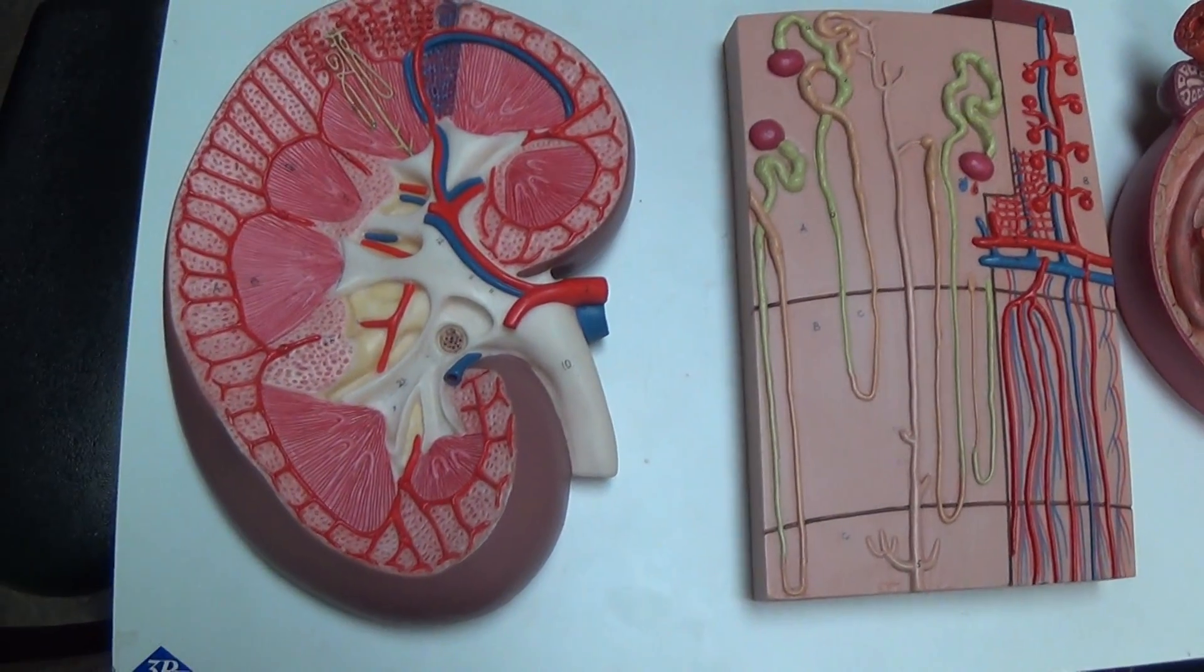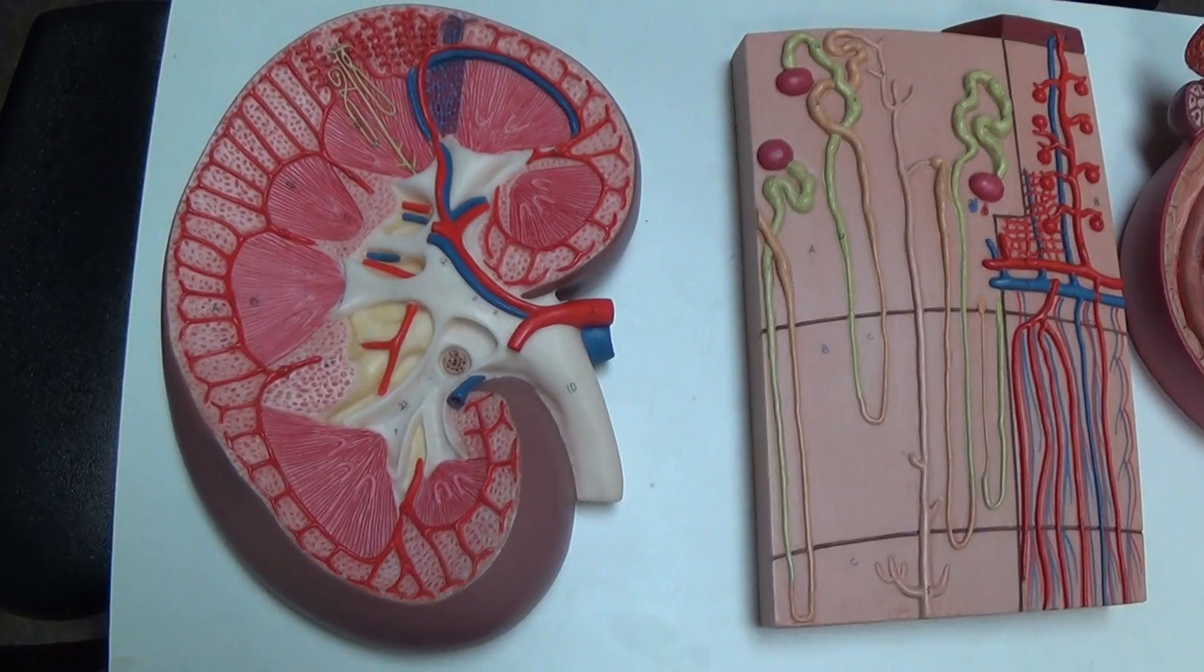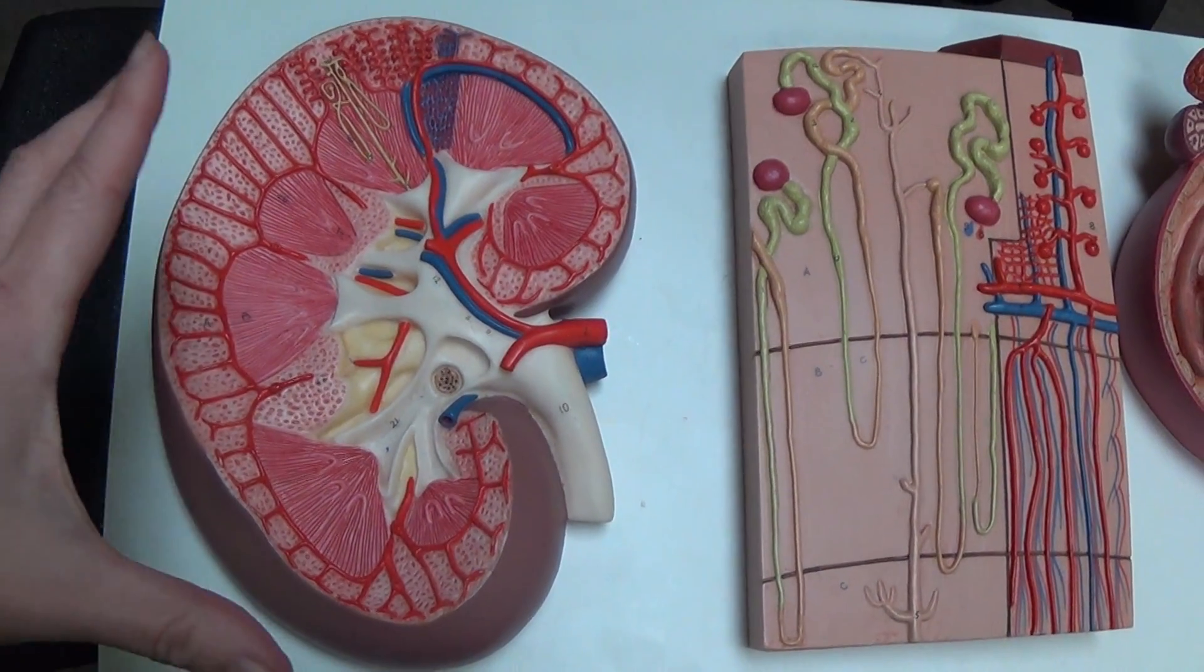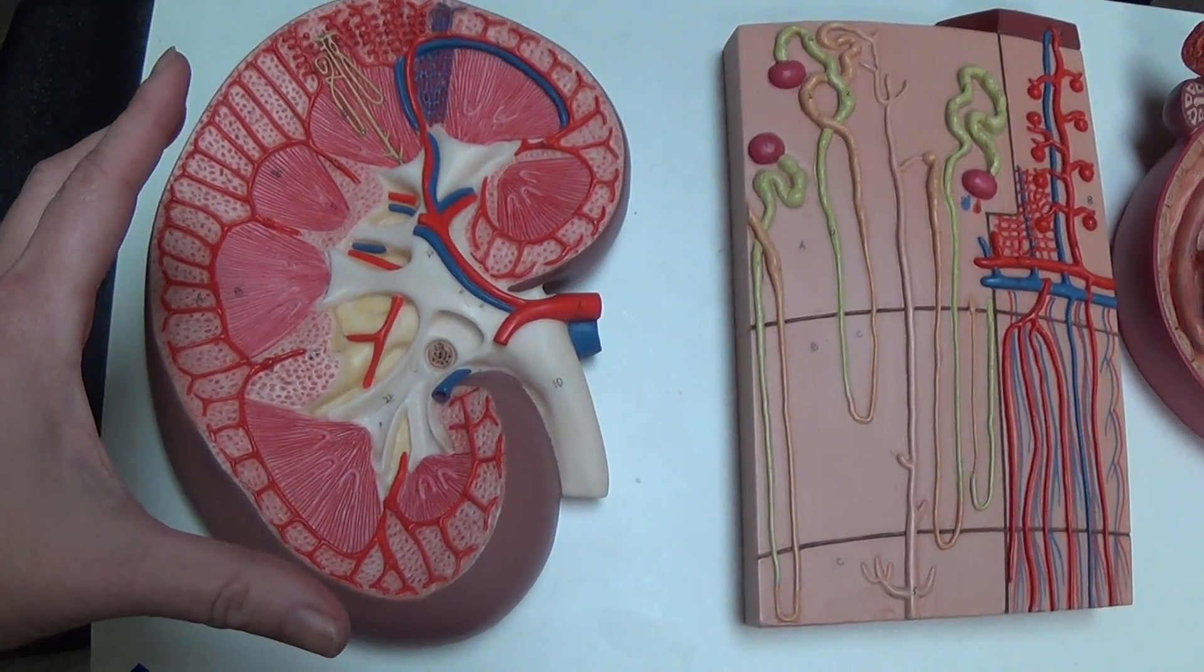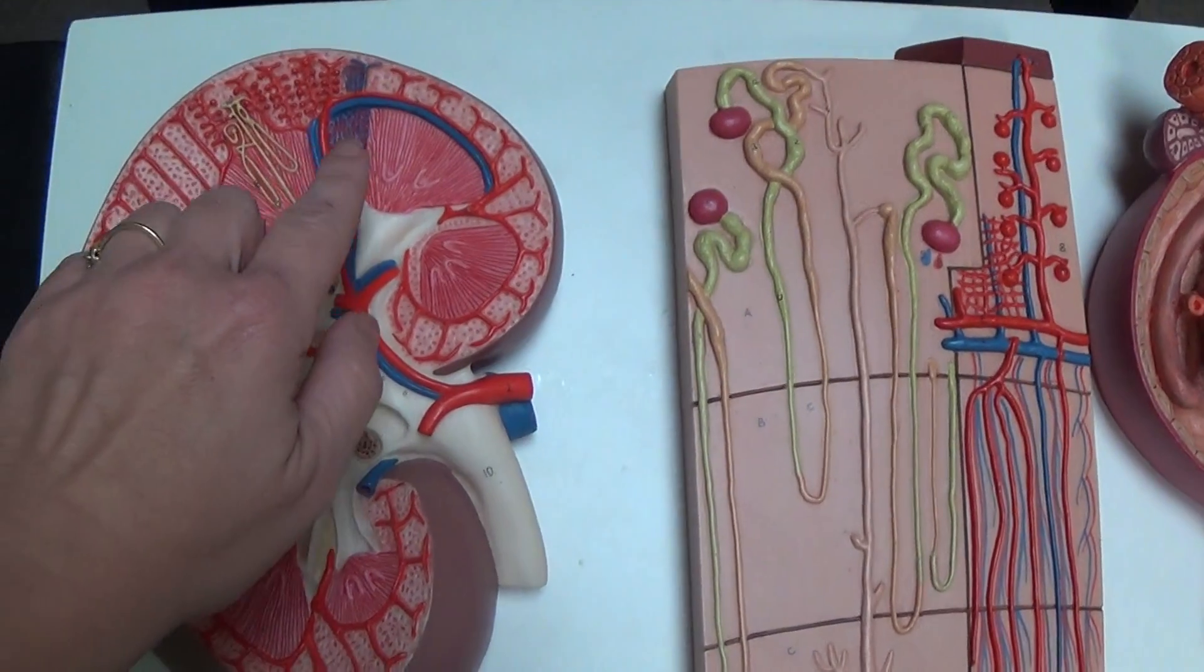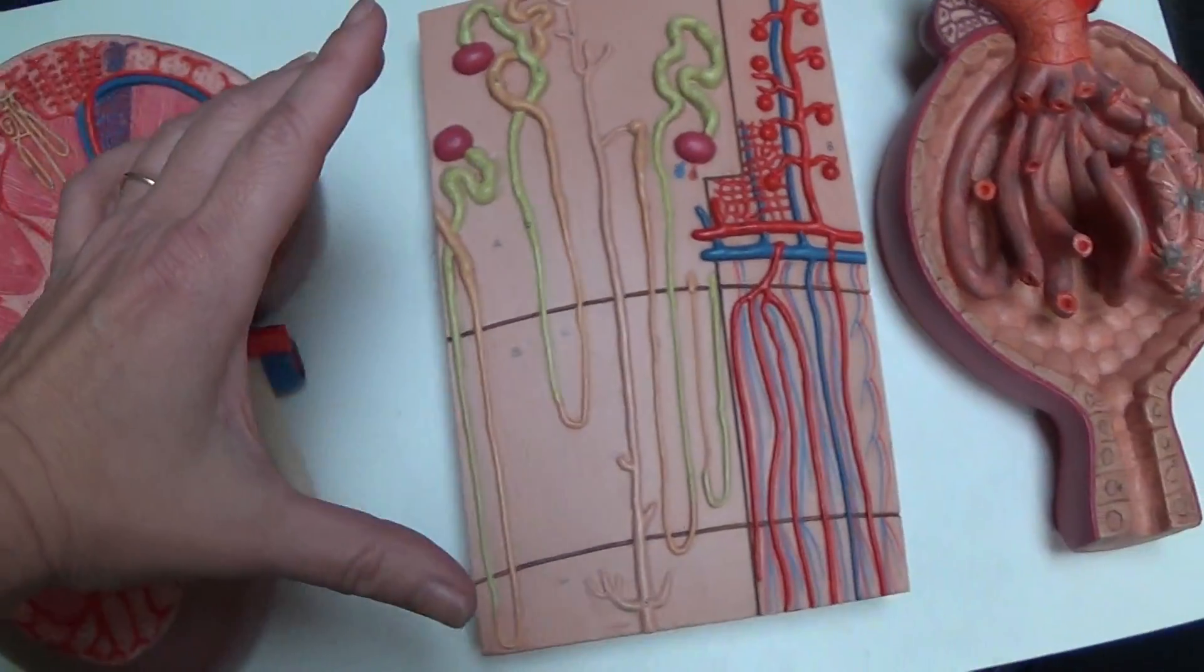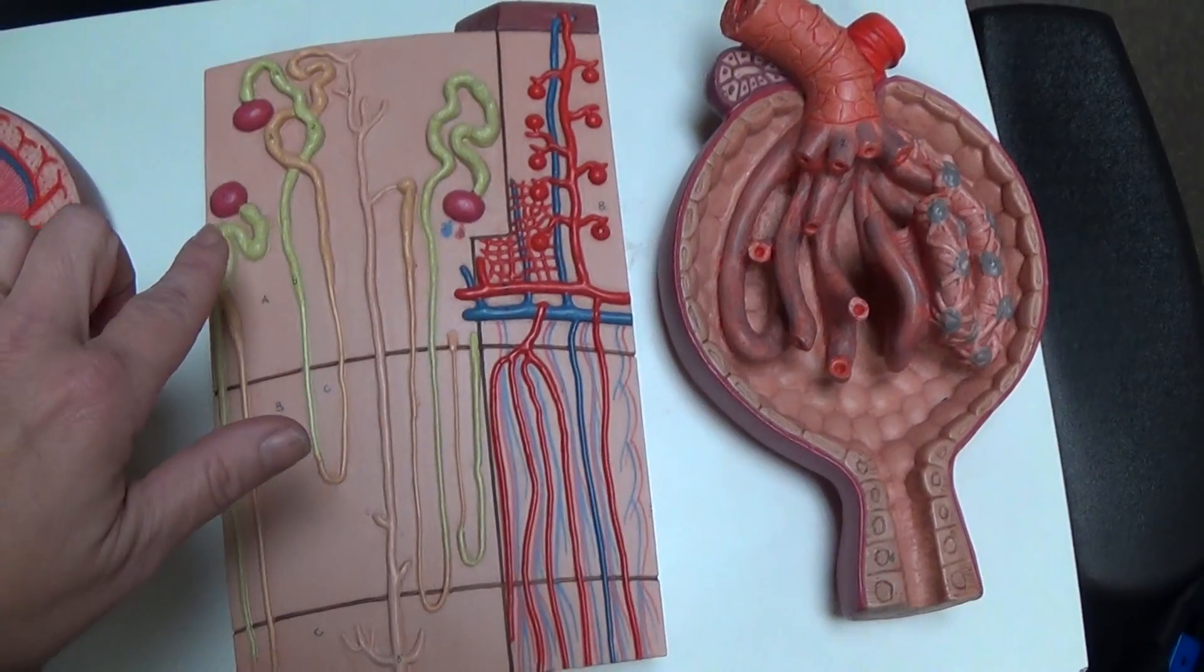This is the kidney board and it's divided into three sections. We have the first section which is a cross-section of the entire kidney. Then we take an insert of this section which I call the middle.